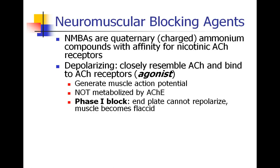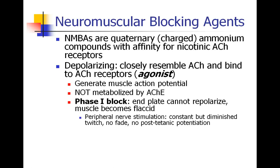In phase one block, acetylcholine binds to the receptor and generates the muscle action potential, which we see as a fasciculation. Then the muscle becomes flaccid and paralyzed. With peripheral nerve stimulation, you will see all twitches decreased in intensity but no fade — all twitches will be the same intensity, just less intense — and post-tetanic potentiation is absent.